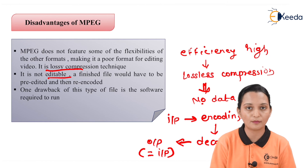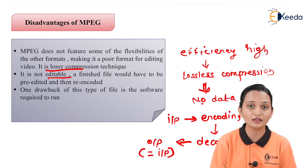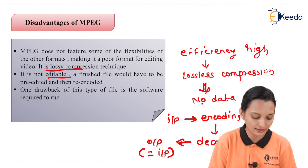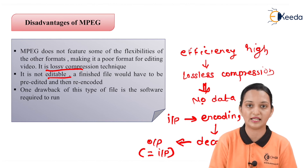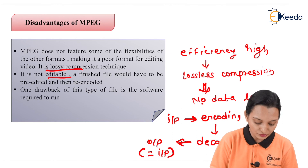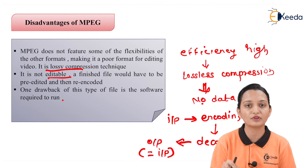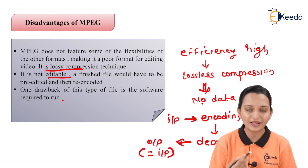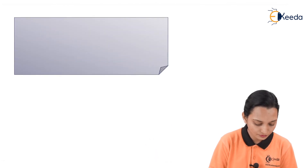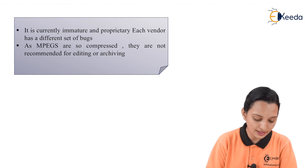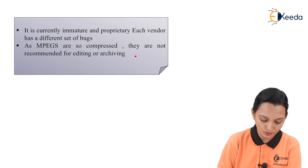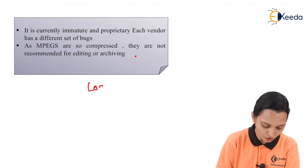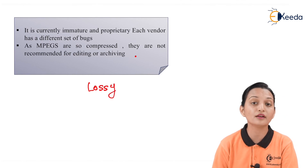Another drawback is that MPEG is not editable — we cannot use MPEG for editing tools. A finished file would have to be pre-edited and then re-encoded. One more drawback is that the software required to run MPEG must always be active to apply algorithms on the files. Additionally, MPEG is currently somewhat immature and each vendor may have a different set of bugs. Because MPEGs are so compressed, they are not recommended for editing or archiving.